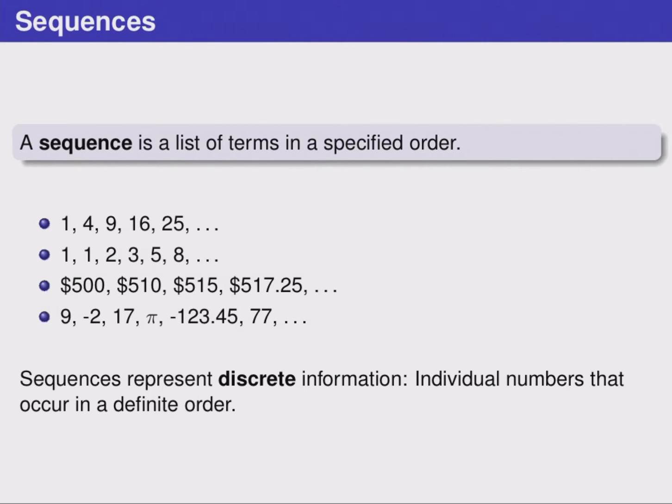Sequences represent what we call discrete information, that is individual numbers that come in a definite order.